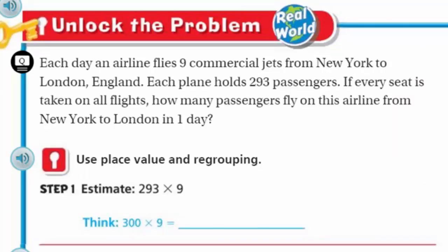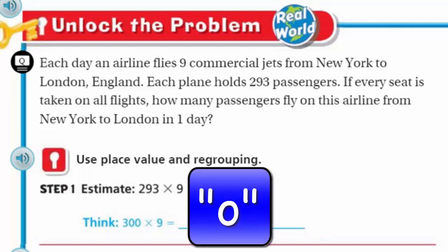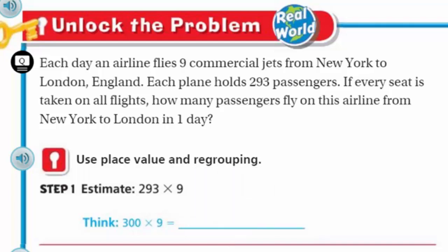Now we have the unlocking part of the problem. It says: use place value and regrouping. Step 1 states: estimate 293 times 9. It says think 300 times 9. Sure — 293, that's practically 300. We're rounding that number to the 300 place because we have hundreds in our actual number. So it makes more sense to round to 300. Let's put 2,700, because we multiply the simple facts 9 times 3 and then add on our two zeros.